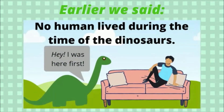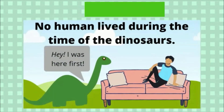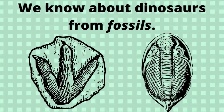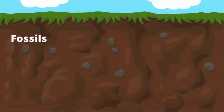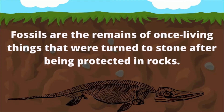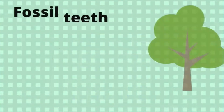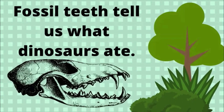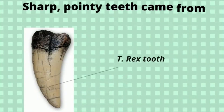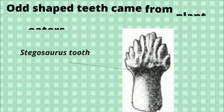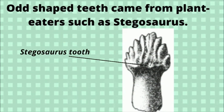Earlier we said no human lived during the time of the dinosaurs, so how do we know about them? We know about dinosaurs from fossils — the remains of once-living things that turned to stone after being protected in rocks. This process usually takes millions of years. Fossil teeth tell us what dinosaurs ate: sharp, pointy teeth came from meat-eaters such as Tyrannosaurus rex, while odd-shaped teeth came from plant-eaters such as Stegosaurus.